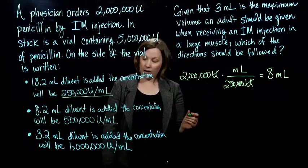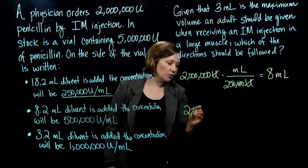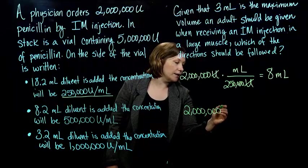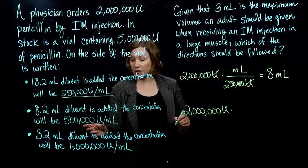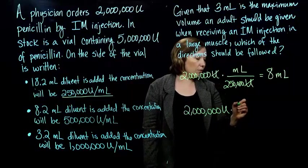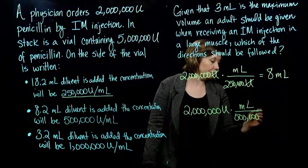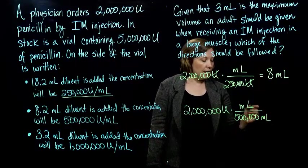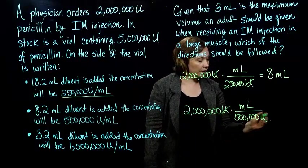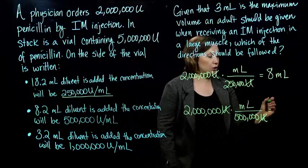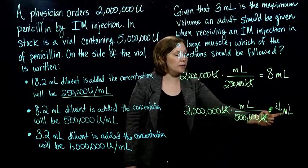Now let's go to the middle one — the 8.2 milliliters of diluent being added, the second concentration. Still the same dose. We're going to multiply by the different concentration we have, putting milliliters on top and changing the bottom to 500,000 units for our new, more concentrated solution. The units cancel and we do 2 million divided by 500,000, which gives us 4 milliliters. Is 4 milliliters still too much? Yes it is.